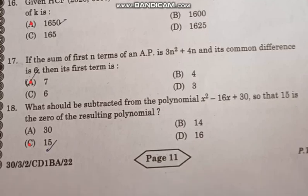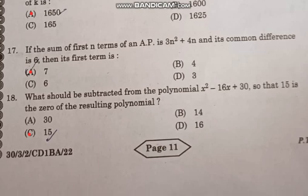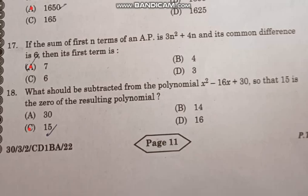Question number 17: If the sum of first n terms of an AP is 3n squared plus 4n, and its common difference is 6, then its first term is correct answer option A, 7.